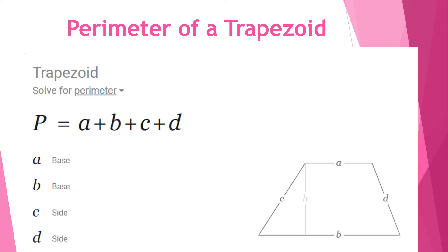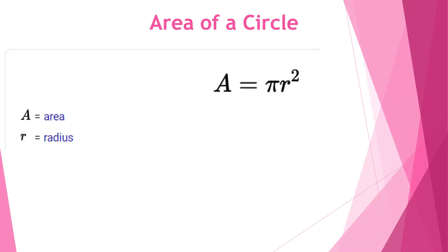To find the perimeter of a trapezoid we have the following formula: P equals a plus b plus c plus d, where a and b represent the bases and c and d represent the sides. There is a picture of the trapezoid on your right side.